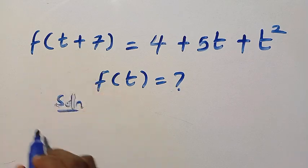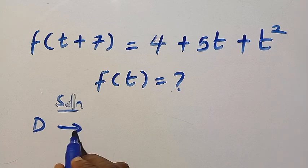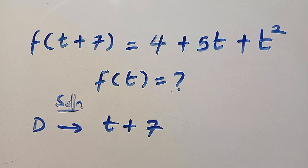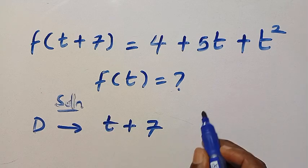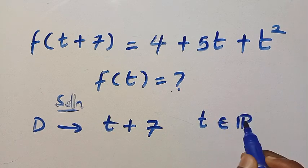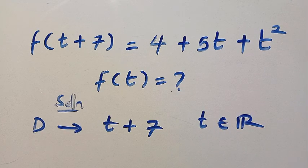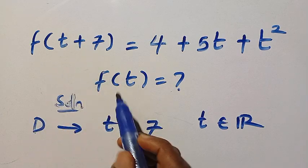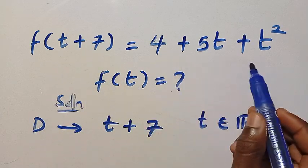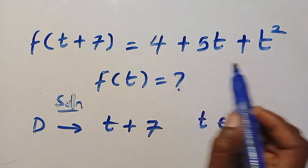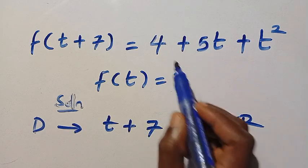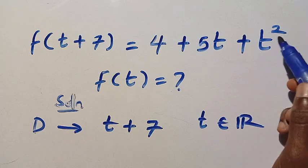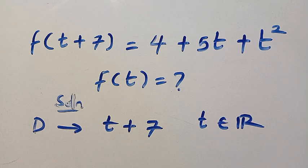So for this function, we are given the domain of this to be t plus 7, where t is a member of all the real numbers. And we want to reduce this t plus 7 to only t. How can we solve it given this output? The output is in the form of a quadratic 4 plus 5t plus t raised to the power of 2.